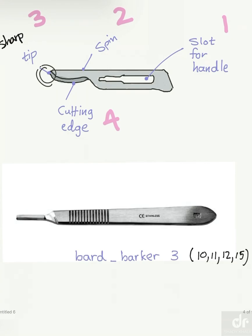Bard Parker 3 is used in oral surgery and dentistry. There is also another handle called Bard Parker 4, which is mainly used for blades number 18 until 23, so we don't use it in oral surgery. Our main concern is Bard Parker 3.